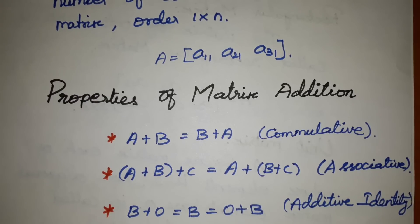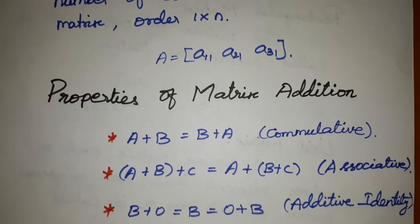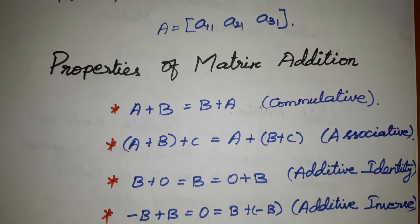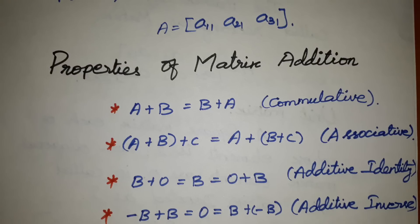For addition: A plus B, where A and B are m×n matrices. A plus B is equal to B plus A. Here, A, B, and C are all m×n matrices of the same order. These are the values for the additive property.